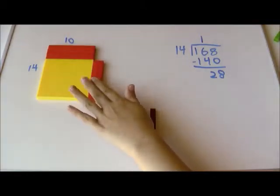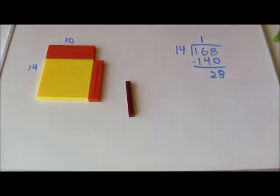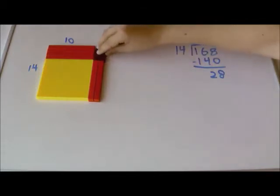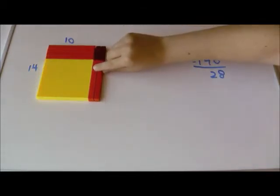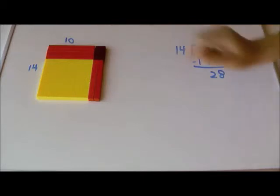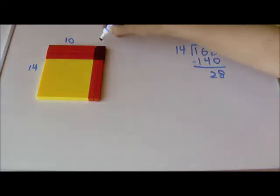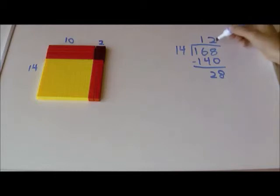So I can put my two tens there and I'll trade my eight for two fours and fit them in here nicely because 14 times two is 28. So I'll put my two in the ones place because I've gone across two now.